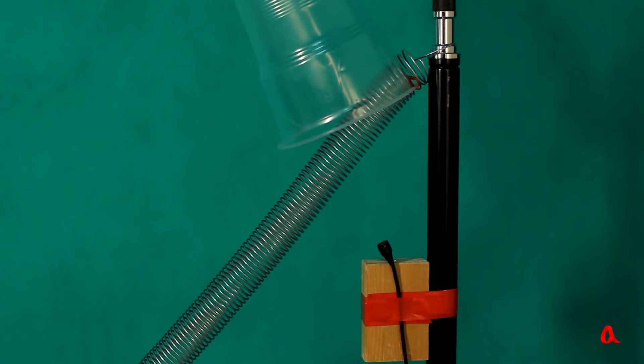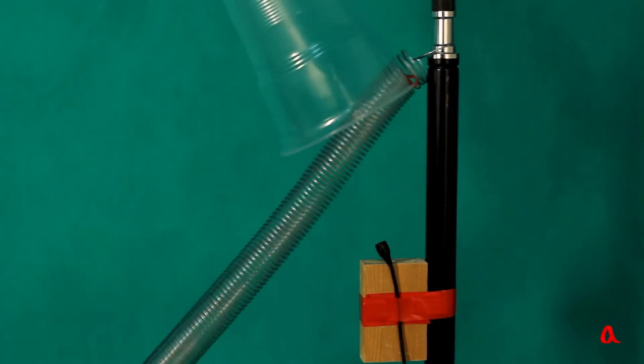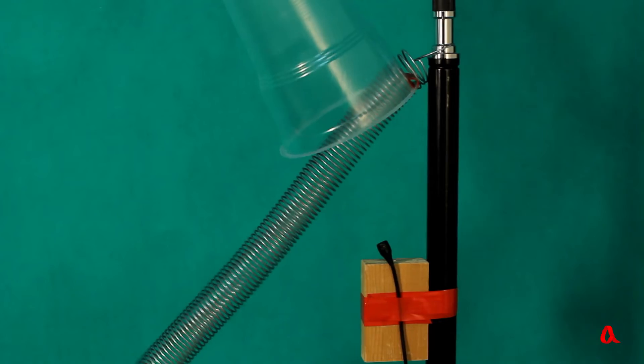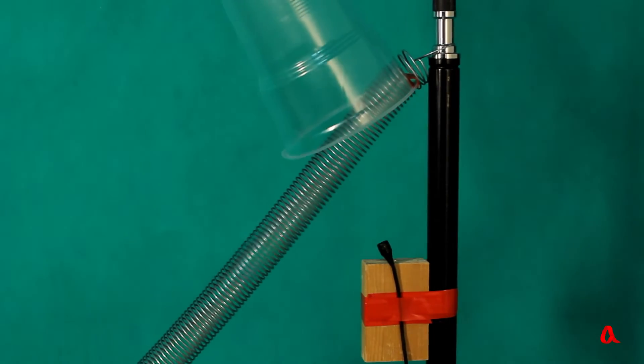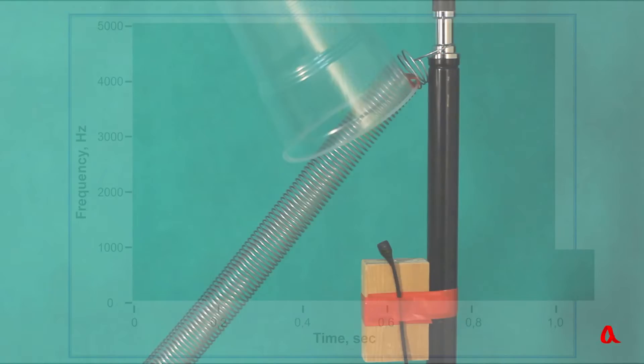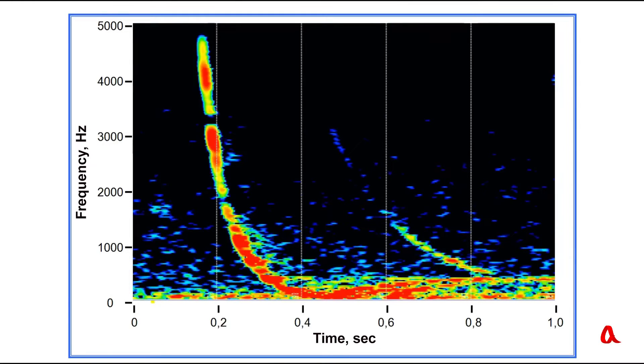Let's record this sound using a microphone installed right underneath the plastic cup and analyze it with the help of Spectrum Lab software. Horizontal marks on the diagram mean time and vertical ones sound frequency. Let's plot the moment of striking the far end of the spring on the graph.